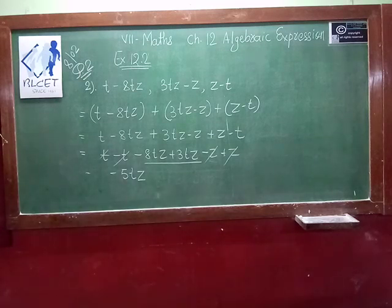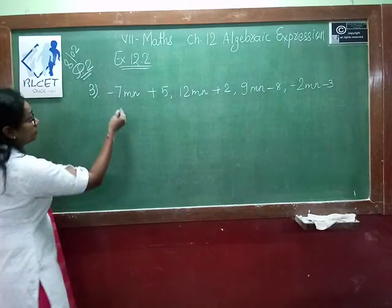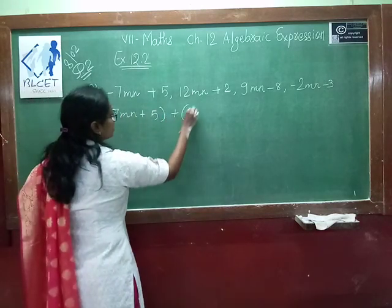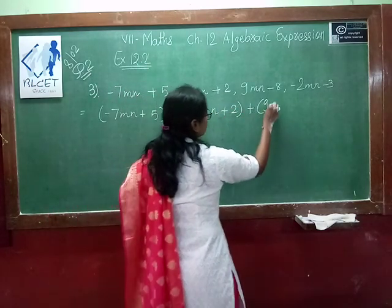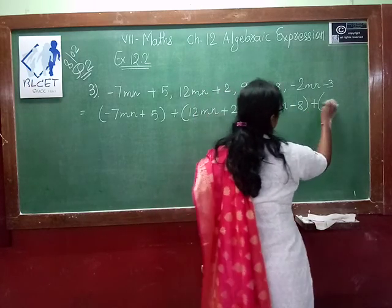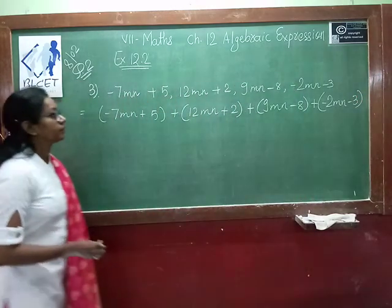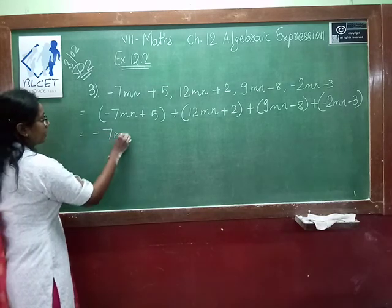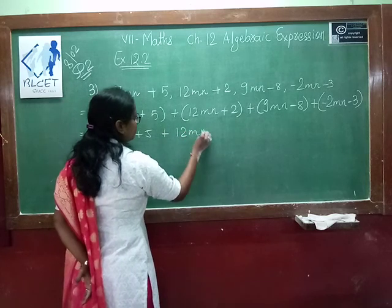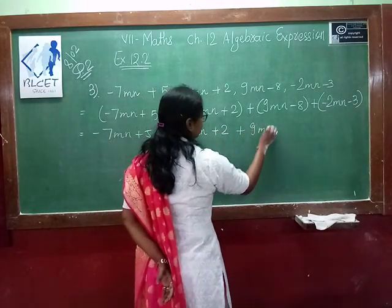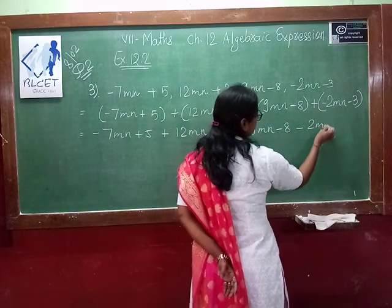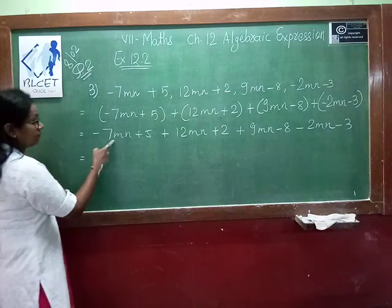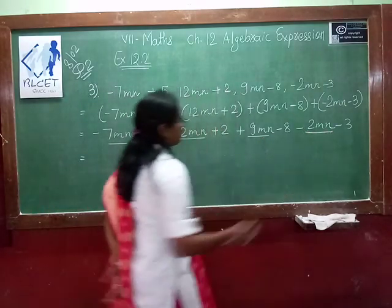Now see the third question. I pick the bracketing method: (minus 7mn plus 5) plus (12mn plus 2) plus (9mn minus 8) plus (minus 2mn minus 3). Addition is mentioned, so I keep the plus sign between all the brackets. Now we open the brackets: minus 7mn plus 5 plus 12mn plus 2 plus 9mn minus 8 minus 2mn minus 3. Now we find the like terms: minus 7mn plus 12mn plus 9mn minus 2mn.